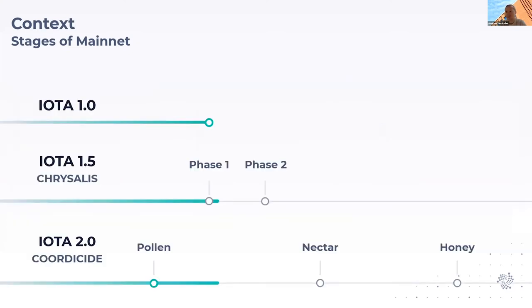So where are we along this path? The 1.0 protocol is basically concluded and has been taken over by work on the 1.5 Chrysalis version, and in parallel there's a test network running on the Coordicide project.